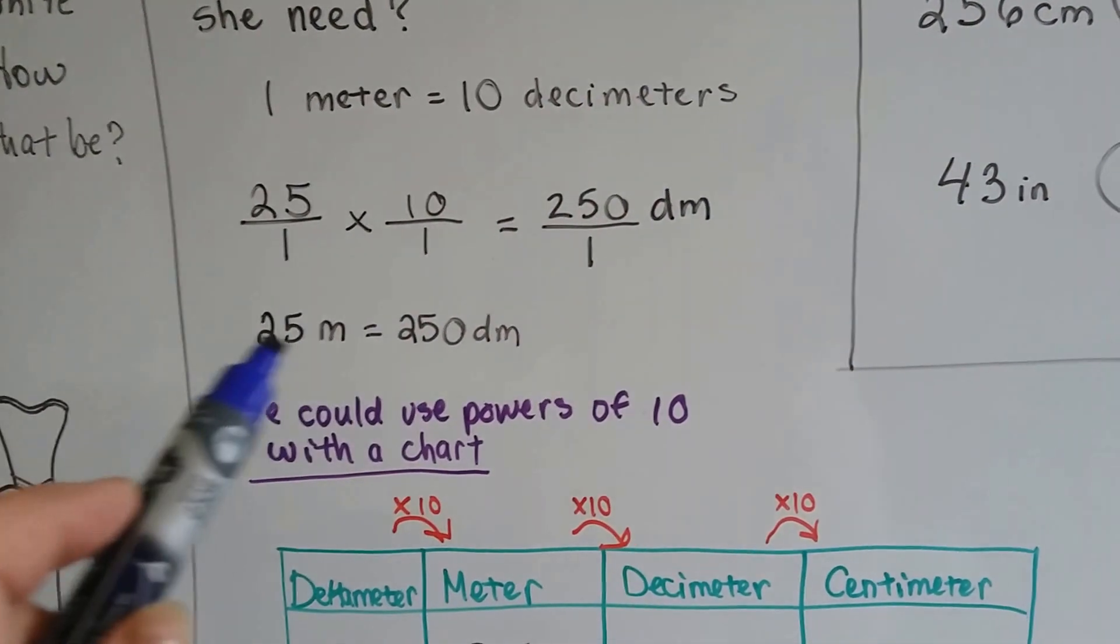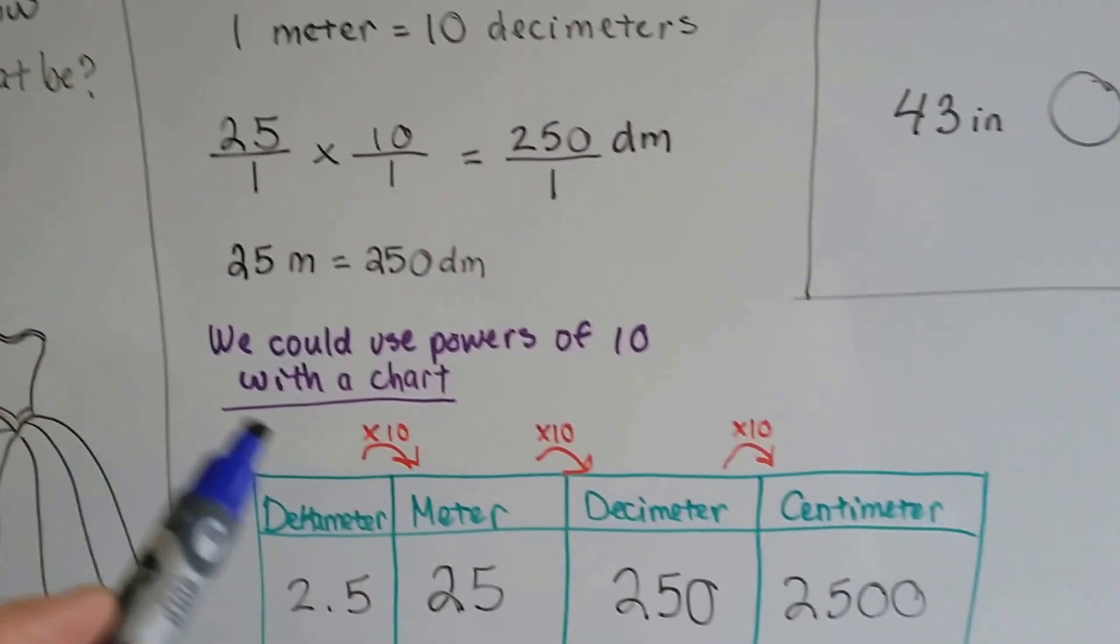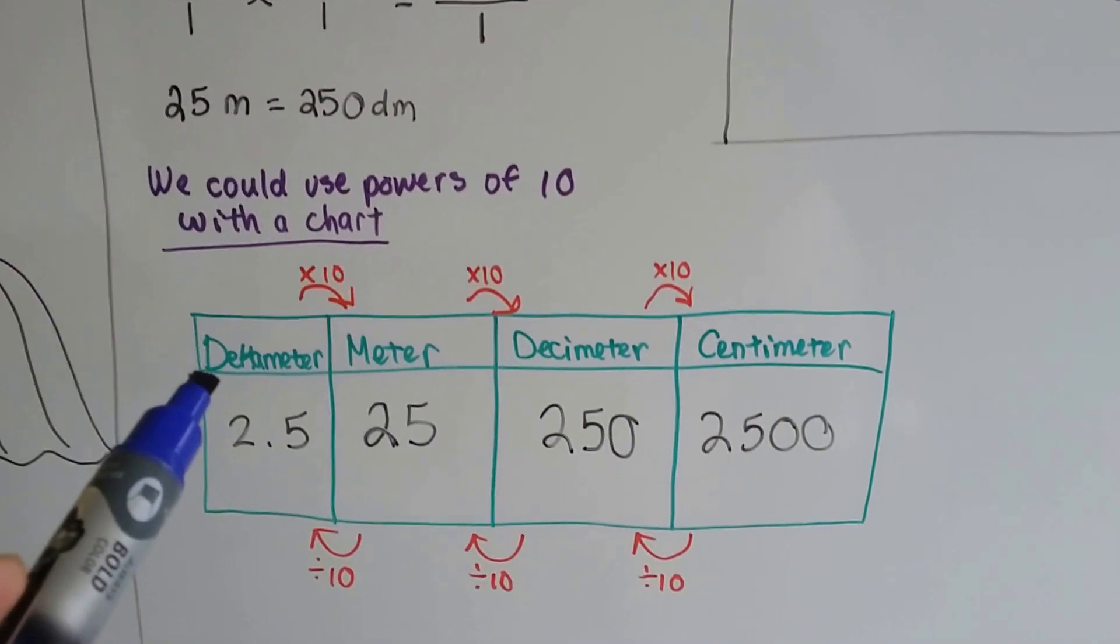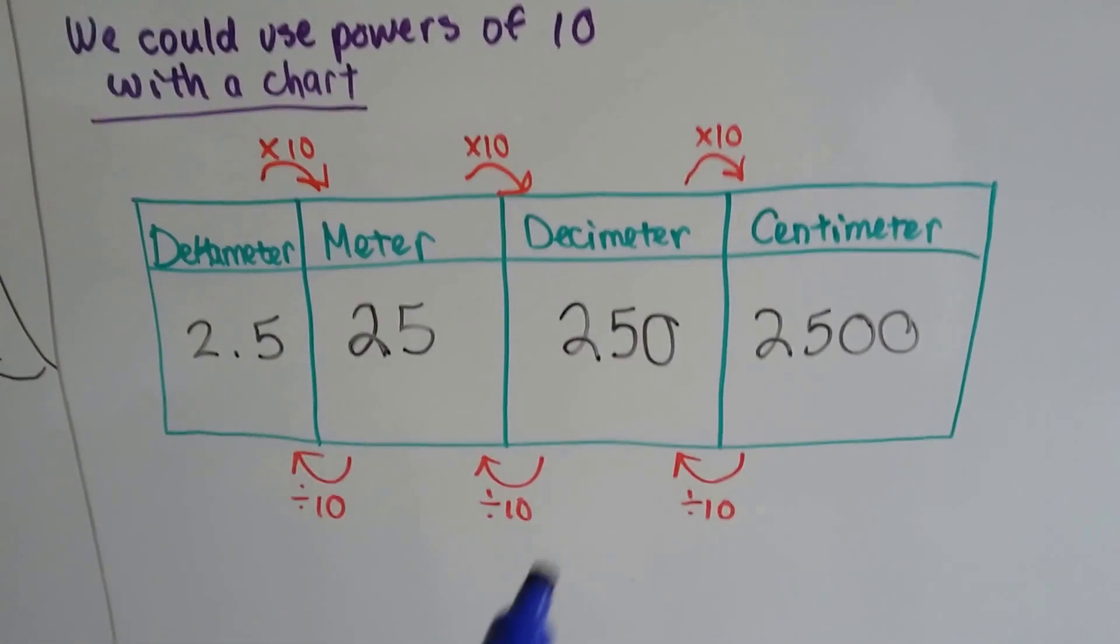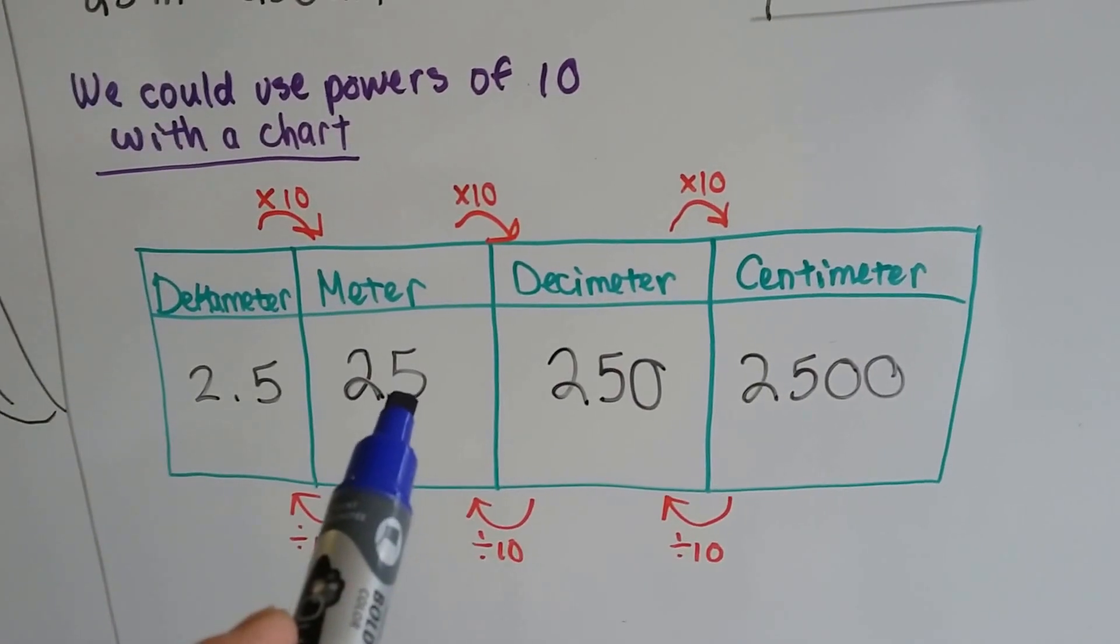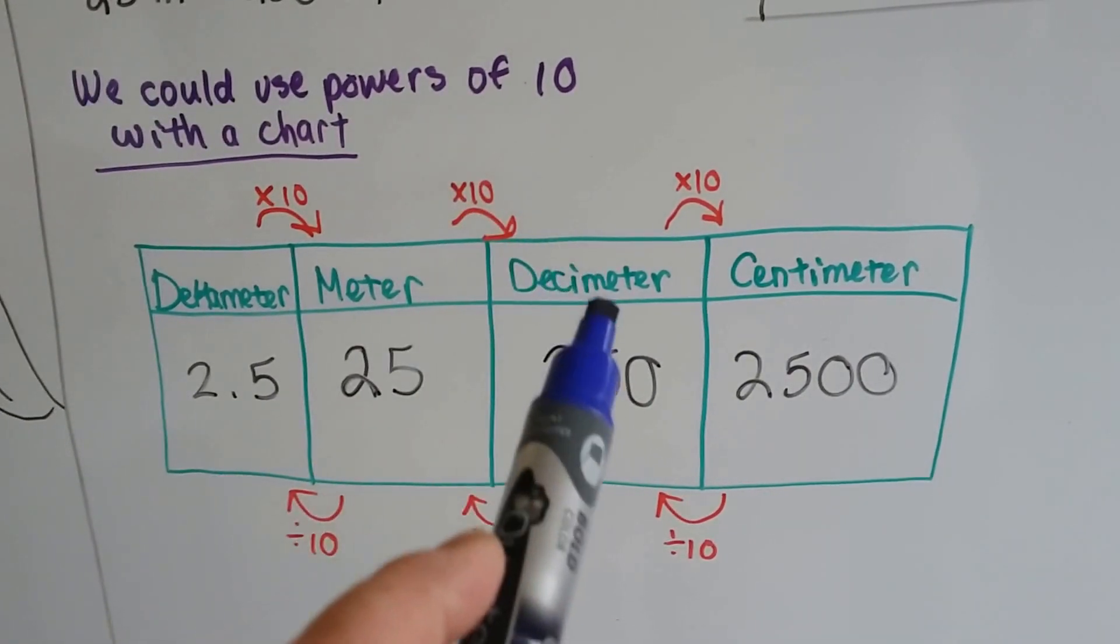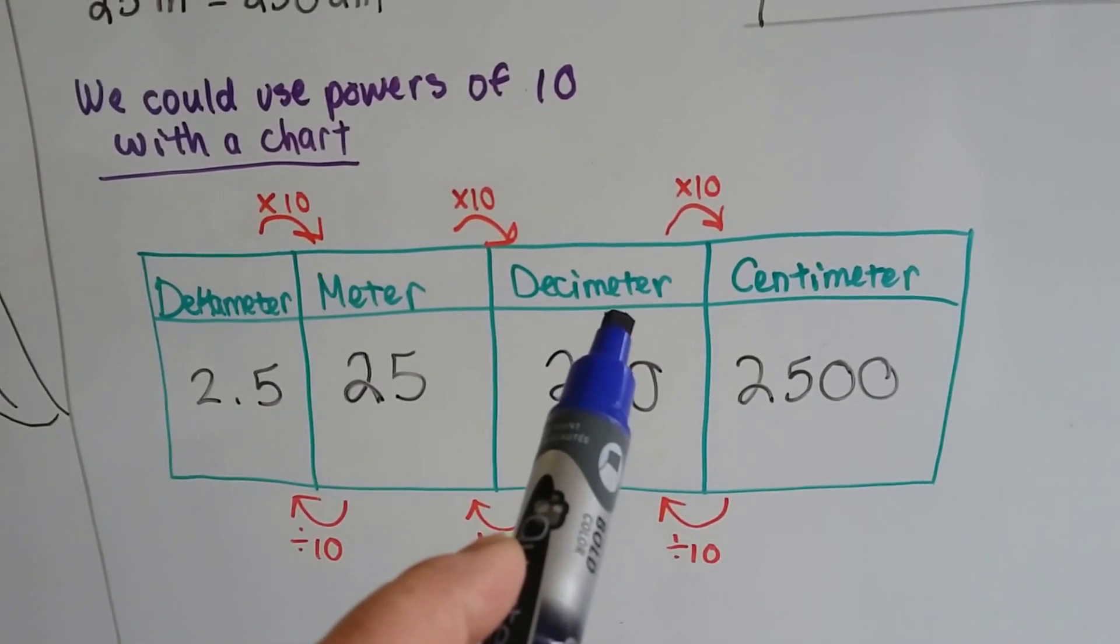See? 25 meters equals 250 decimeters. So we can use a chart with the powers of 10 to see how easy this would be. If it's 25 meters, we just multiply it by 10 to go to a smaller unit like decimeters.